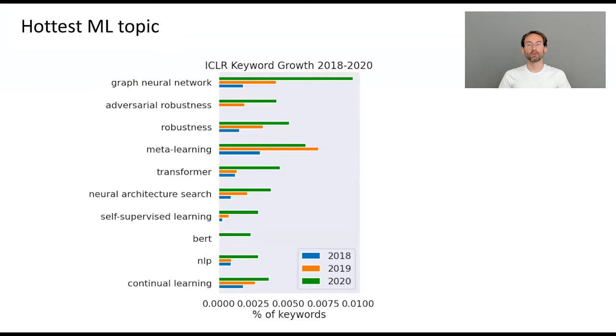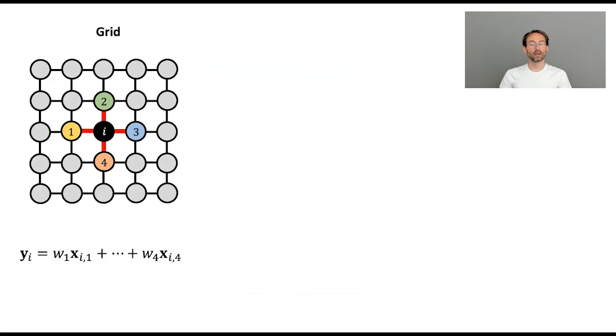This year graph neural networks have officially become one of the hottest topics in machine learning, at least judging from the submission statistics of ICLR, one of the main conferences in machine learning. And in order to understand what is different than what is similar about graph neural networks, let's look at classical convolutions.